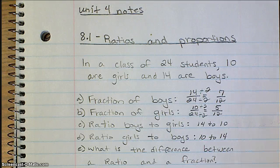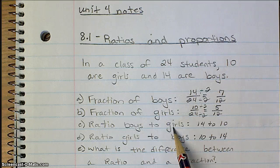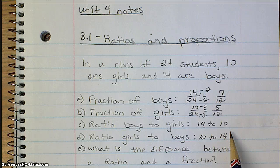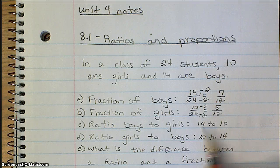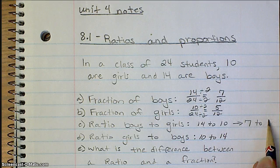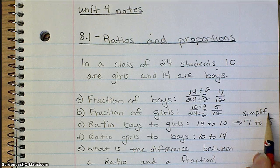Okay, the same thing works for ratios. So boys to girls, well there's 14 boys, 10 girls. You can also simplify a ratio kind of the same way that you would simplify a fraction. So both of these are divisible by 2. The simplified version, or simplified ratio, would be 7 to 5.